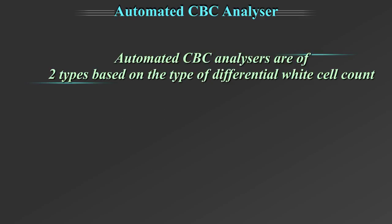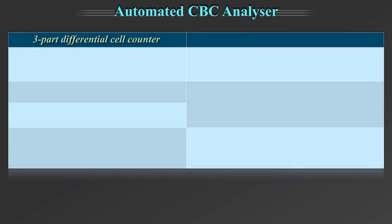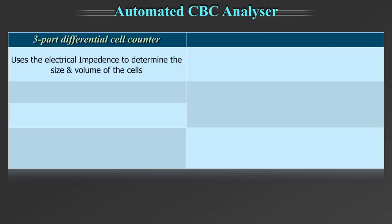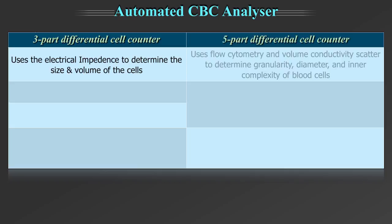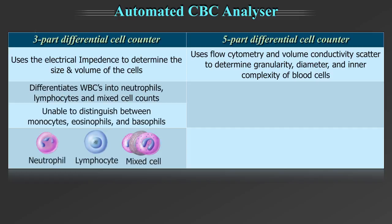Automated CBC Analyzers are of two types based on the type of differential white cell count: the 3-part differential cell counter and the 5-part differential cell counter. The 3-part differential cell counter functions on the principle of electrical impedance to determine the size and volume of the cells. A 3-part differential cell counter differentiates white blood cells into neutrophils, lymphocytes, and the mixed cell count, but is unable to distinguish between monocytes, eosinophils, and basophils.